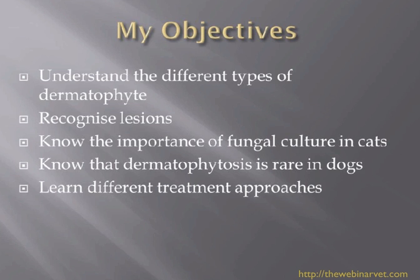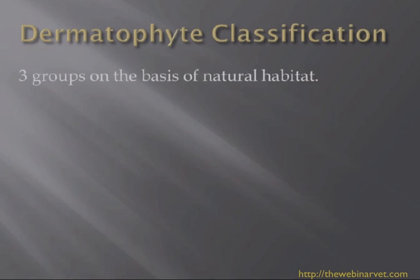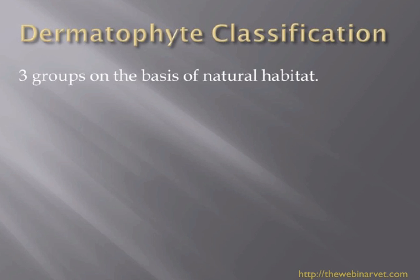I'd like to go through some of the different treatment approaches, as there are different ones depending on the situation in the household — is it a single cat, are there multiple cats? A dog would be treated differently from a cat, and so on. I want to spend some time looking at the multi-cat household or cattery type situation.